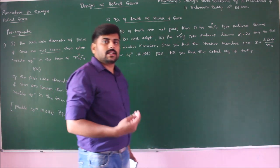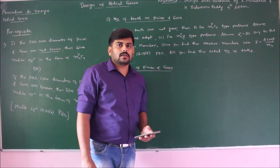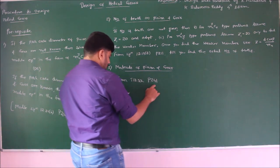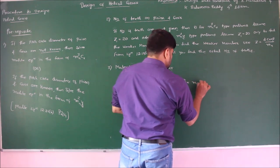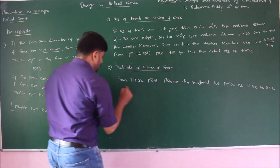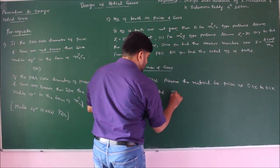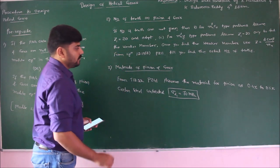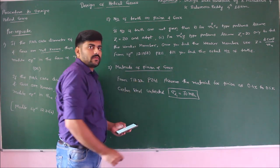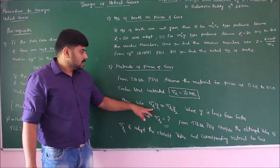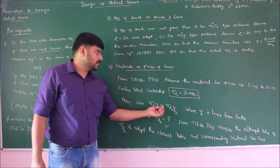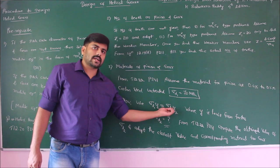Moving on to our third prerequisite — material details. If the materials of pinion and gear are not known or not given in the question, then from table 12.22, page number 241, assume the material for pinion as 0.4% to 0.5% carbon C untreated, giving sigma_d1 as 70 MPa. If material is given but allowable static strength is not mentioned, refer table 12.22, page 241. Then use sigma_d1·y1 = sigma_d2·y2: the product of allowable static strength and Lewis's form factor of pinion must equal that of the gear.